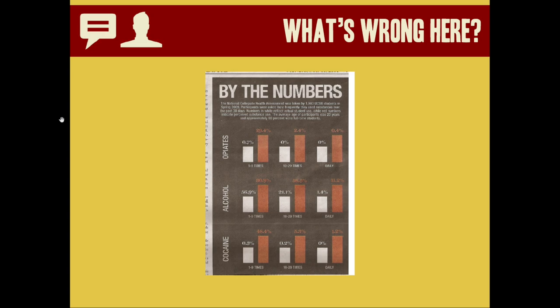Here's one that's particularly terrible. I think that this was probably just a dummy graph put in by a newspaper editor so that they would change the bar heights later when they got the data, but they never quite got around to it. So this is from data from the National Collegiate Health Assessment in the University of California, Santa Barbara. It's showing the difference between the perceived substance abuse that folks thought their peers were engaging in versus the actual amount of substance abuse. The perceived numbers are in red on the right and the actual numbers are in white on the left. But note that all of the bars are exactly the same size.